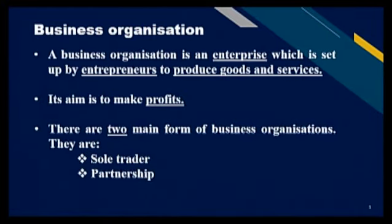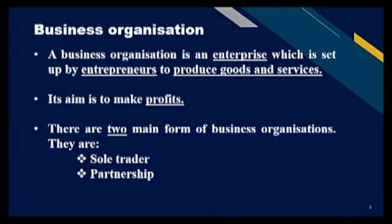What is a business organisation? A business organisation is an enterprise which is set up by entrepreneurs to produce goods and services. An entrepreneur's aim is to make profit. There are two main forms of business organisations, which are sole trader and partnership.